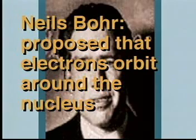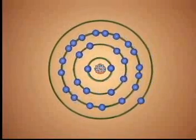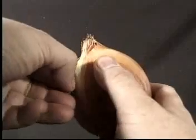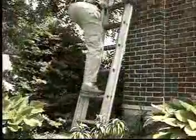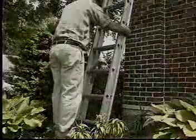A couple of years after Rutherford's contributions, Niels Bohr proposed that electrons orbit around the nucleus. He stated that each electron has a fixed amount of energy, and that the electrons orbit within energy levels, forming rings around the nucleus, similar to the layers of skin around an onion. The energy levels in Bohr's model can be compared to a ladder with rungs. As you climb the rungs of the ladder away from the nucleus, the amount of energy increases. By absorbing or releasing energy, an electron can move between energy levels, similar to climbing up or down a ladder.